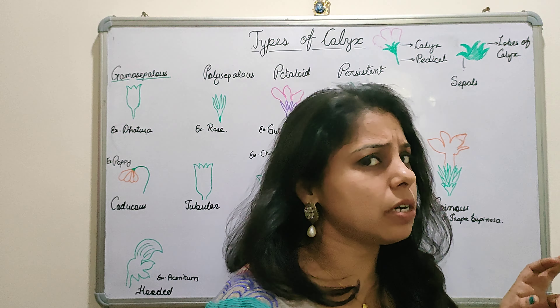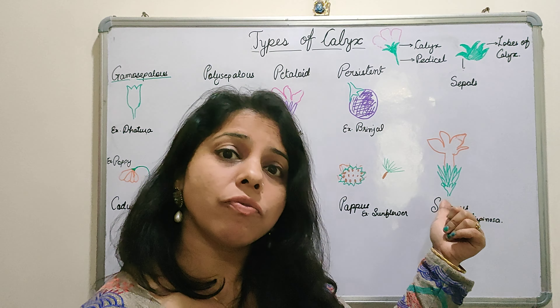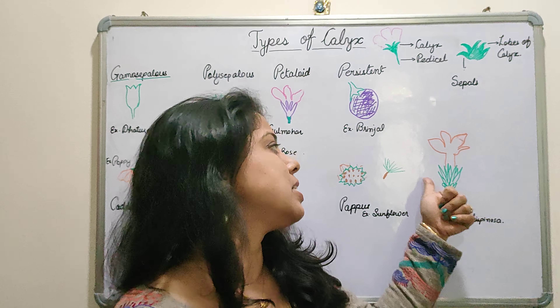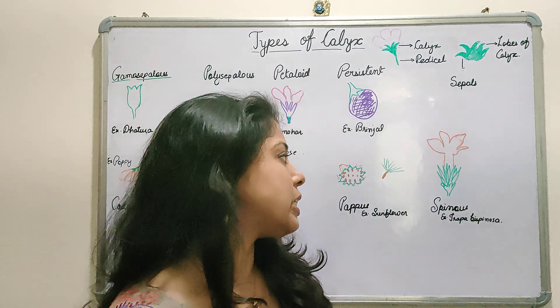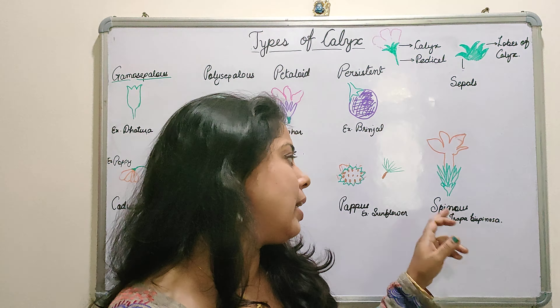Next is Spinous calyx. As the name suggests, the sepals become spine-like structures. The sepals transform into spines, and that is why the condition is called spinous. This can be seen in Trapa bispinosa, commonly known as singhara, which is a fruit. The spines are actually the modified calyx.